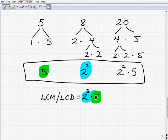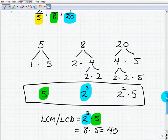So this is two cubed times five, which, of course, is two cubed is eight. Eight times five, which is forty. Okay, so our LCD or LCM of these numbers is forty.